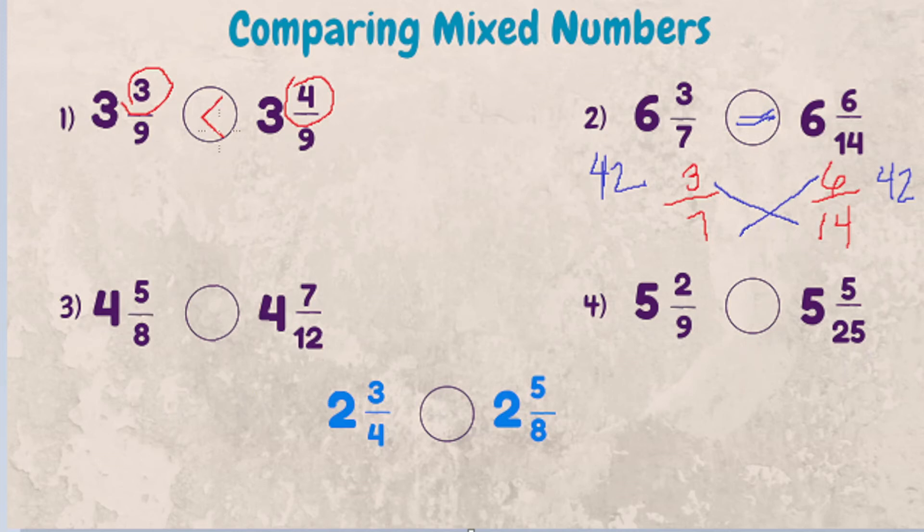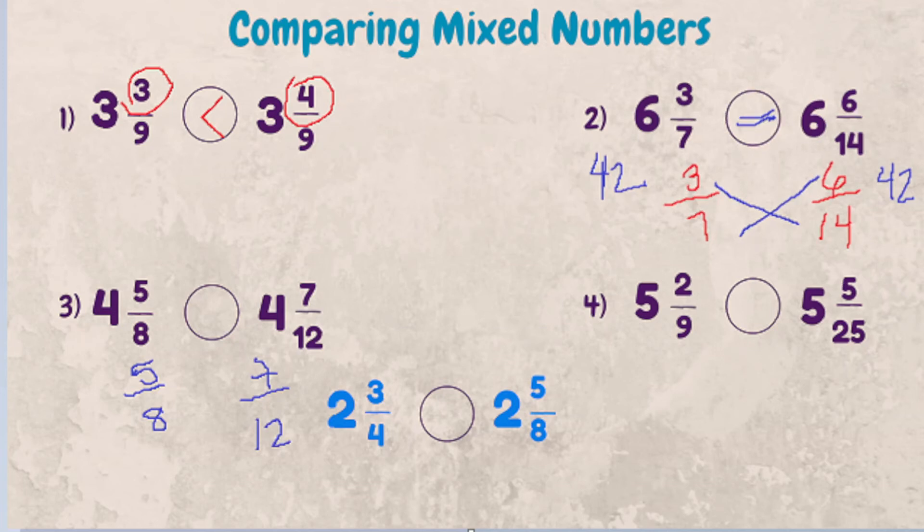Third example. Four and five eighths compared to four and seven twelfths. So our whole numbers are the same. Denominators are different. So let's isolate these two as five eighths and seven twelfths. We know five times twelve is going to be sixty. Eight times seven is fifty-six. Sixty is greater than fifty-six, so four and five eighths is greater than four and seven twelfths.